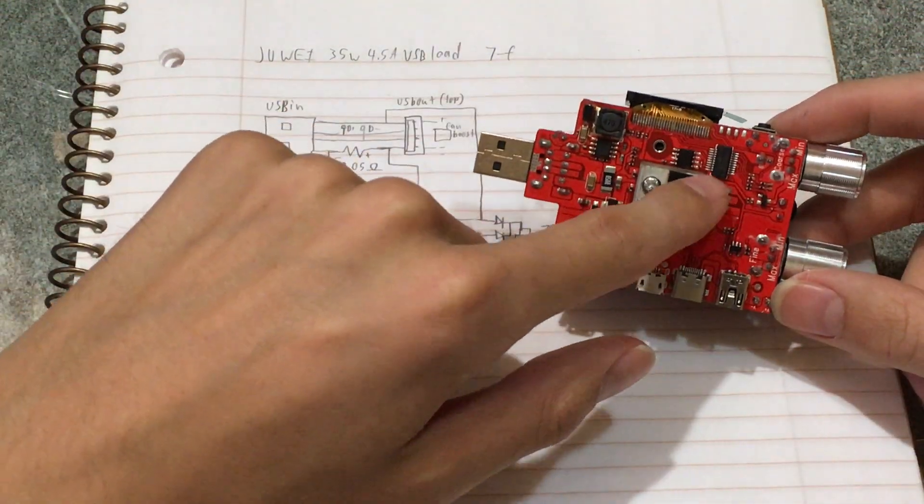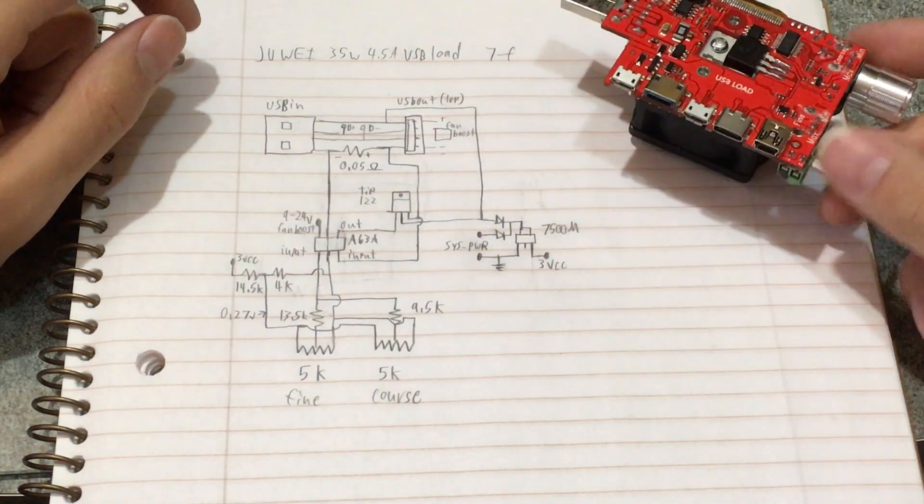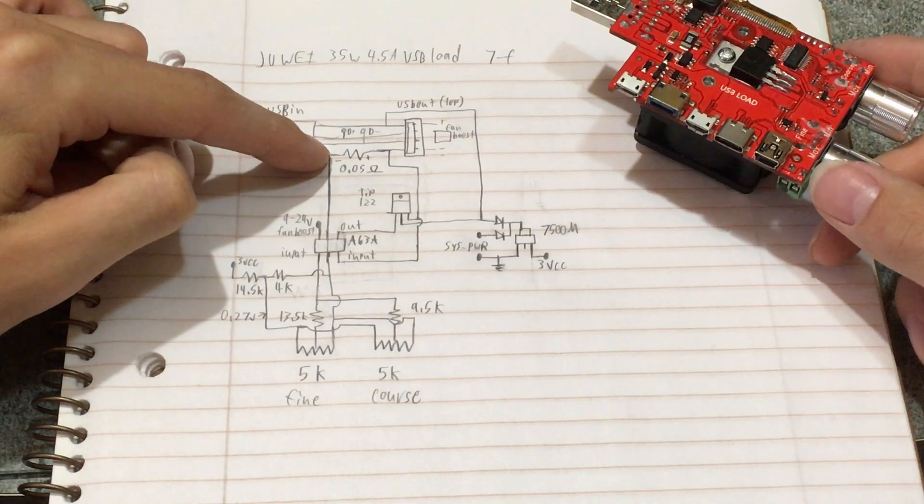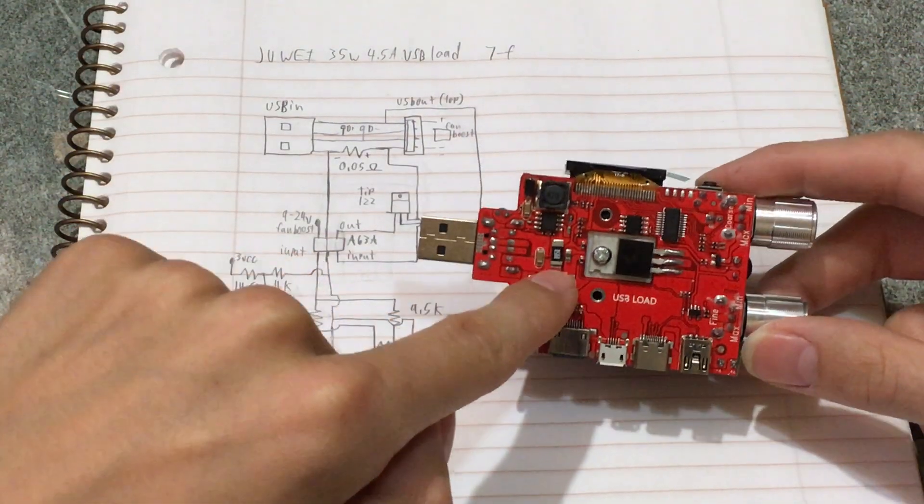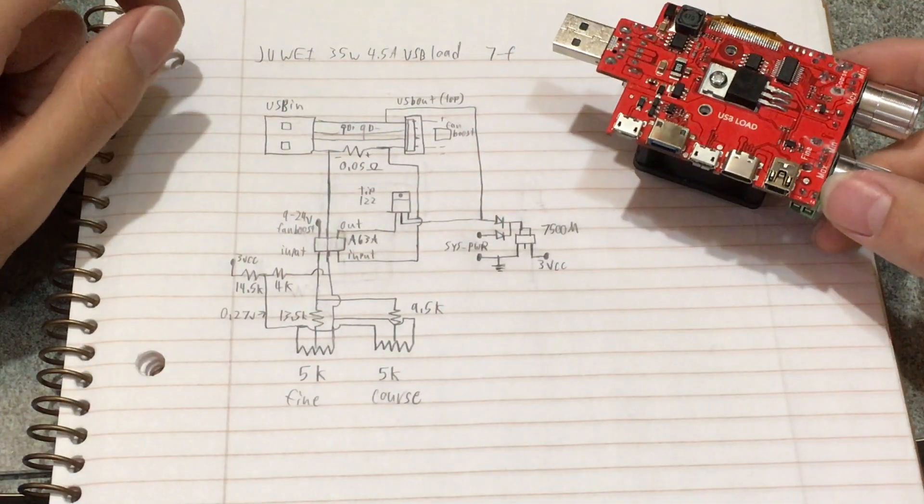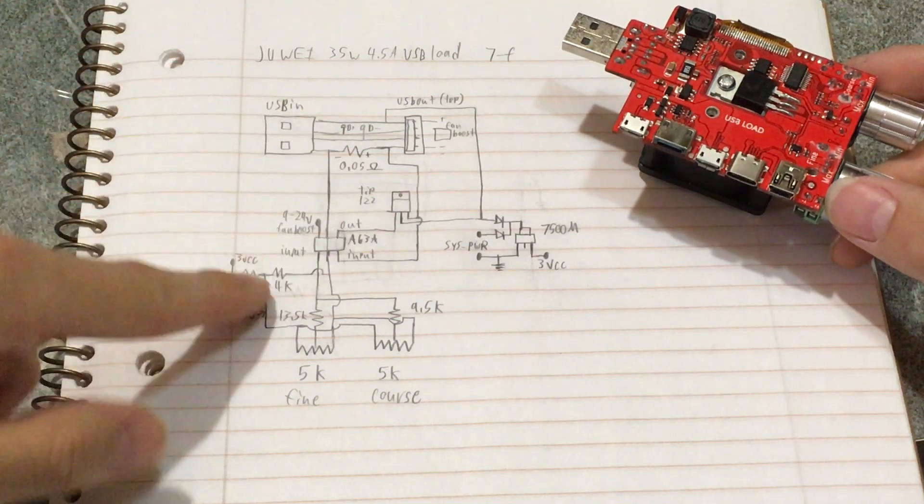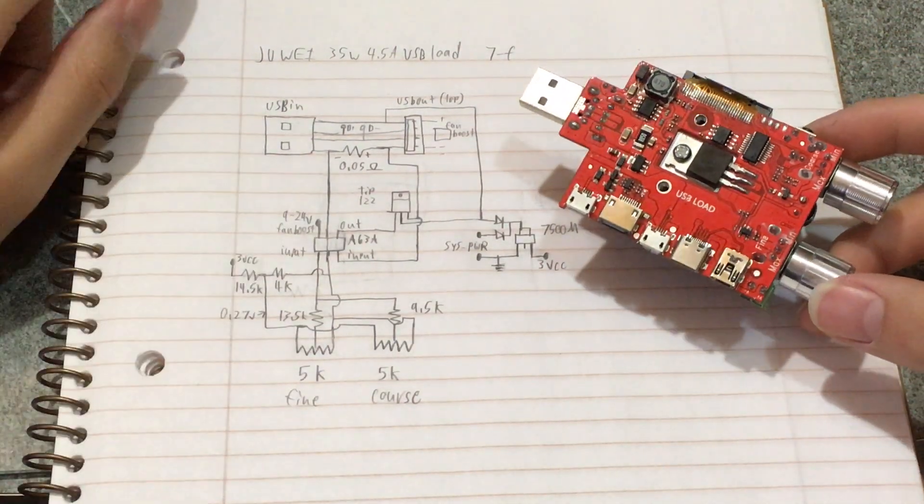The D plus and D minus of the data lines go to the microcontroller over there so it can read the voltages and then you've got this resistor in here on the negative side which would be that guy right there. So this would be the constant current circuit.